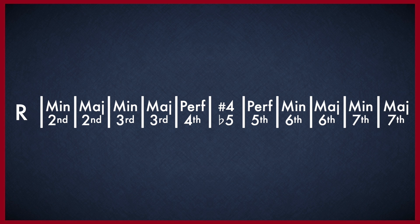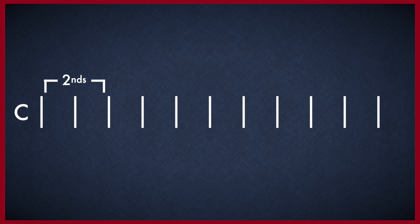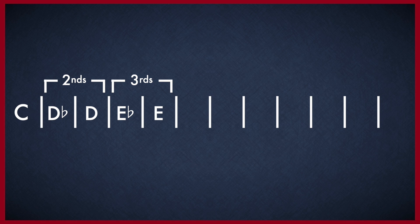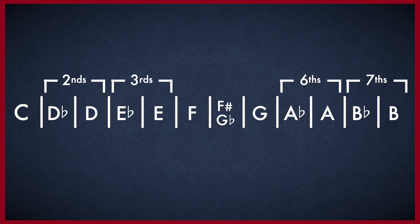There are a couple of extra details worth knowing about intervals. The note letter always changes with the interval number. For example, if we're in the key of C so C is the root note, the seconds must be D's of some sort - we couldn't call the minor second C sharp, we'd have to call it D flat. The major second would just be D natural. Likewise the minor third would be E flat, not D sharp, because the thirds are E's - so the major third is E natural. The fourth would be F, the fifth would be G, the tritone could be F sharp or G flat depending on whether you think of it as a sharp four or flat five. The sixths would be A's and the sevenths would be B's, then back to C for the octave. That's why you have both options of the sharp of one note or the flat of another, so you can always select the correct option for the key you're in.